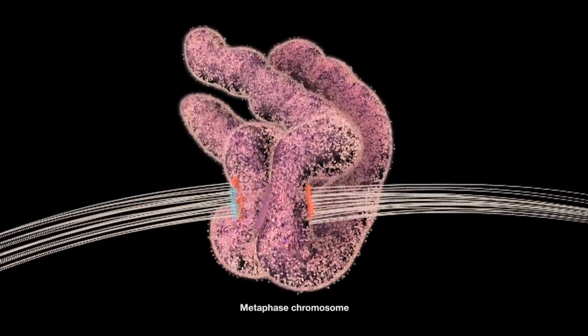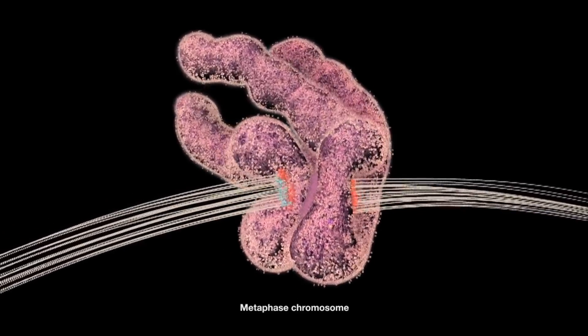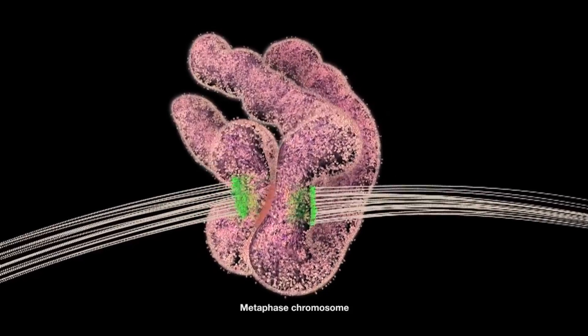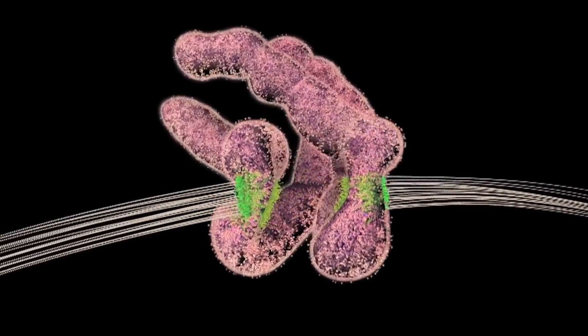When all the kinetochores are ready, the cell transitions into the anaphase stage, with the chromatids pulled apart to the opposite poles of the cell.